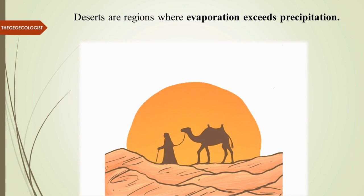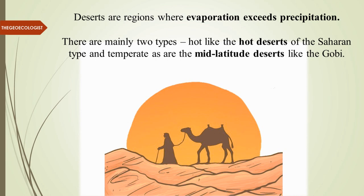There are mainly two types: hot deserts of the Saharan type, which are very famously known, and temperate or mid-latitude deserts like the Gobi Desert. There are also cold deserts such as Antarctica and areas in the Himalayan region.